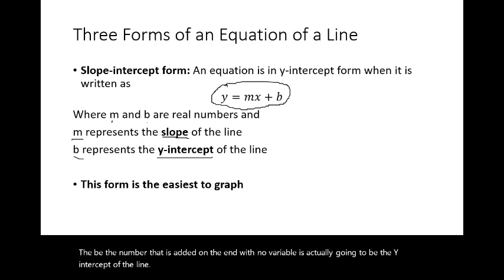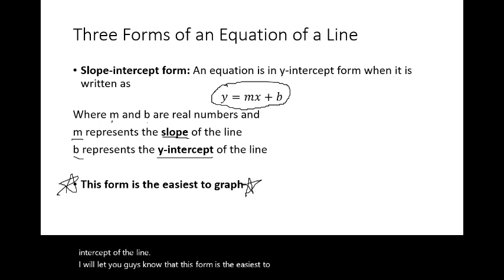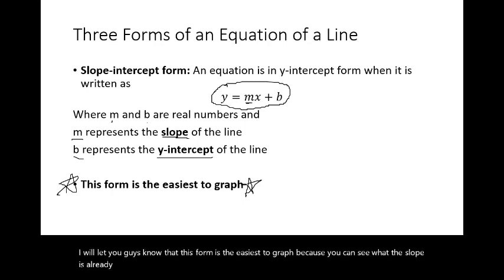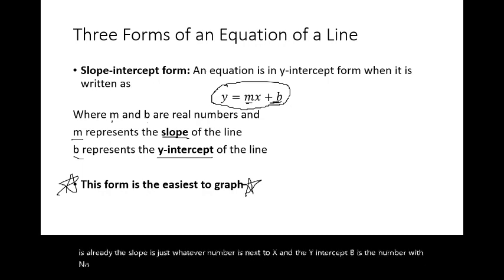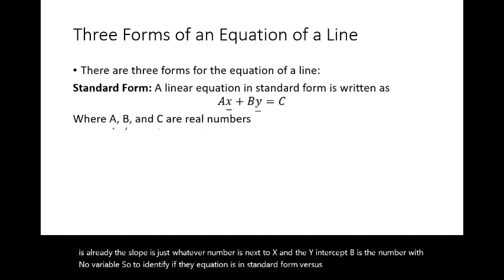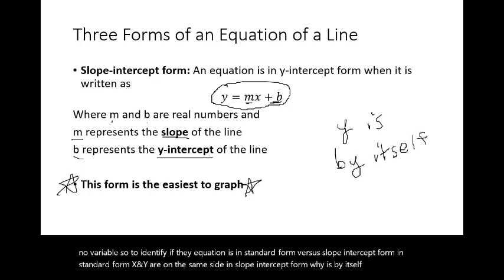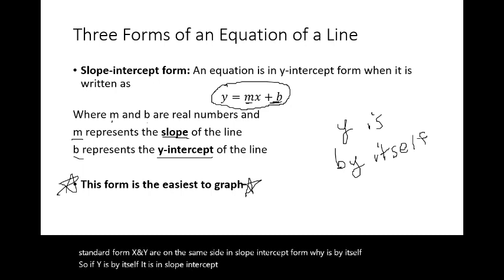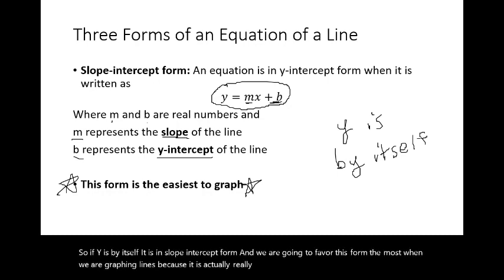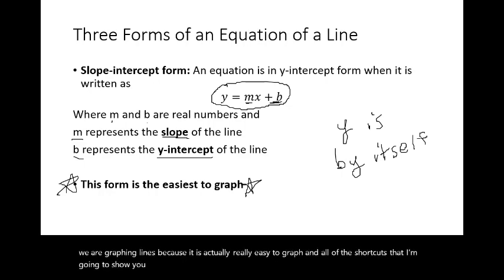Slope-intercept form is the easiest to graph because you can see the slope right away — it's the number next to x — and b is the y-intercept, the number with no variable. To identify the form: in standard form, x and y are on the same side; in slope-intercept form, y is by itself. We will favor slope-intercept form most when graphing lines, since all the shortcuts revolve around it.